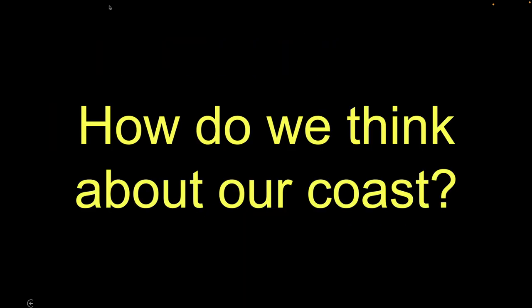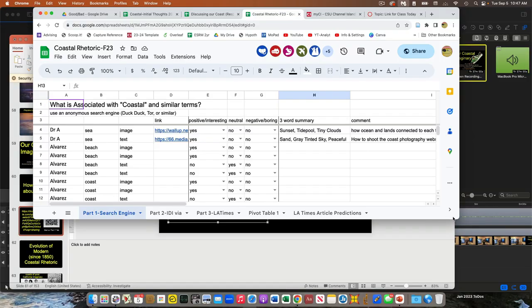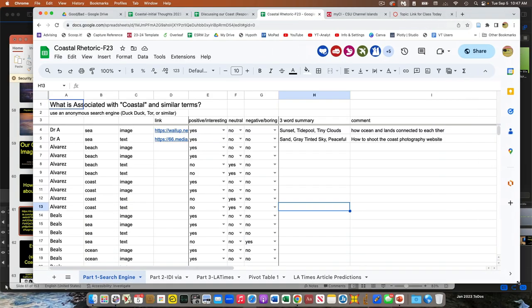Now I want to get into starting to talk about how we have more broadly thought about the coast. The first thing we're going to do is a little activity. You guys can click this — it's going to take you to a spreadsheet. We're just going to start on tab one for now. While you guys do that, have a look up here. Let me explain what we're going to do.